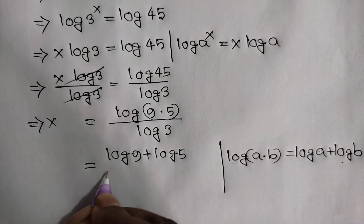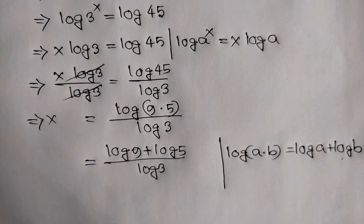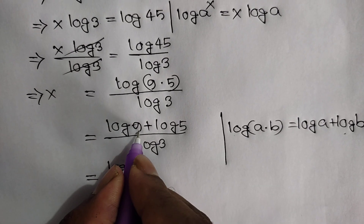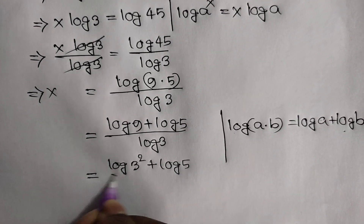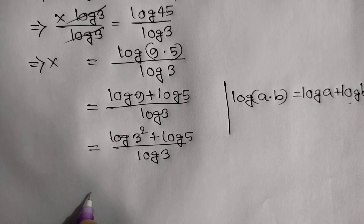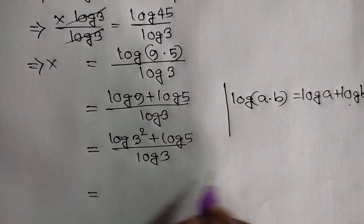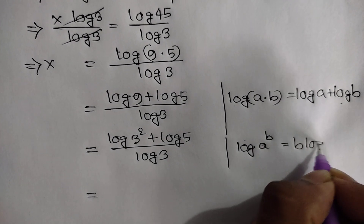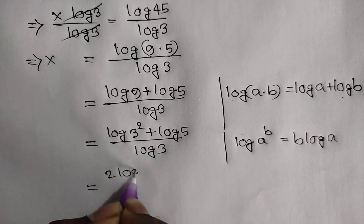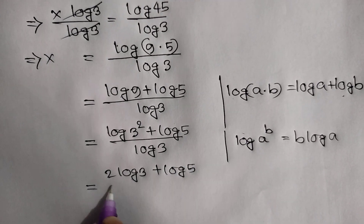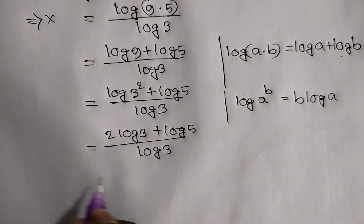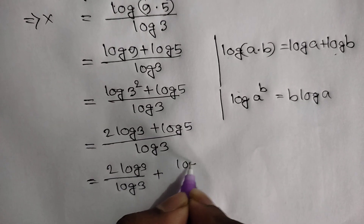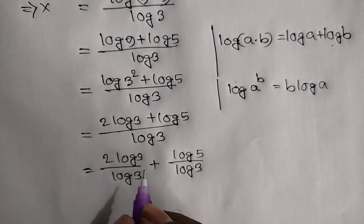Applying this formula, we can write log of 3 squared — because 3 squared is the same as 9 — plus log of 5, all over log of 3. Here we can apply the formula log of a to the power b is equal to b log a, giving us 2 log of 3 plus log of 5 over log of 3, which equals 2 log of 3 over log of 3, plus log of 5 over log of 3.